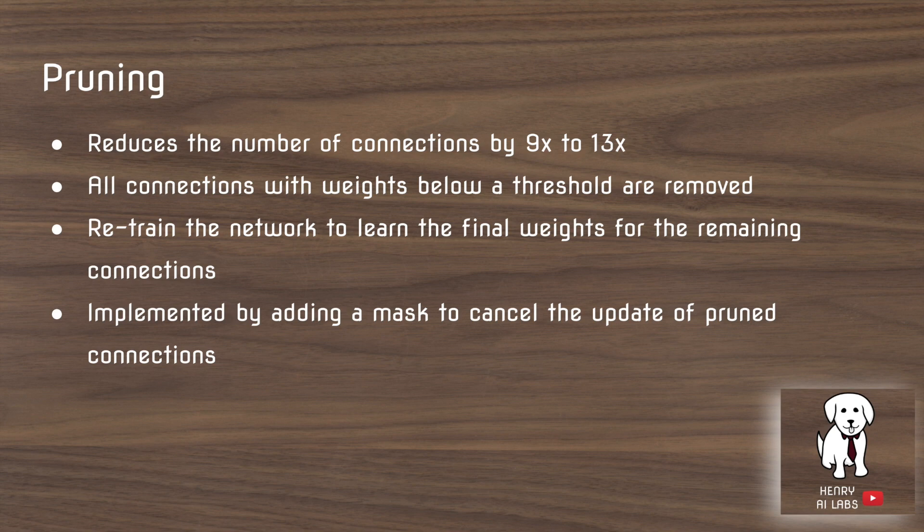For example, if a neural network weight is 0 or maybe 0.1 or negative 0.1, it would be completely masked out and they would no longer use this in the matrix multiplications that compute the neural network output.